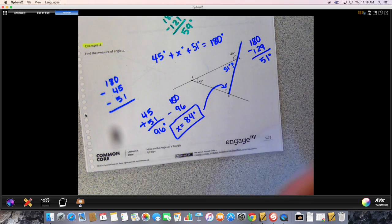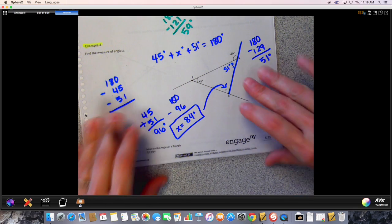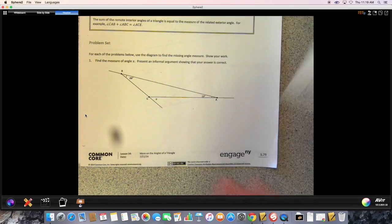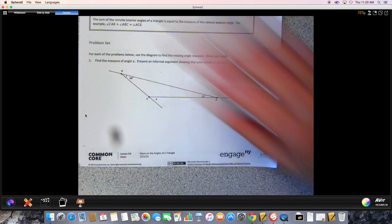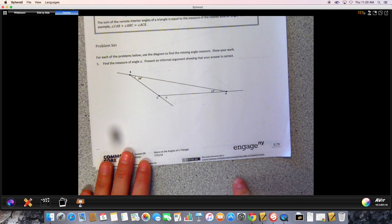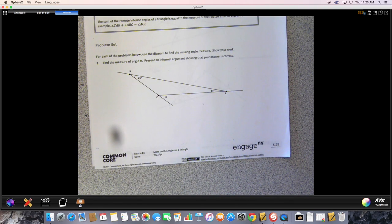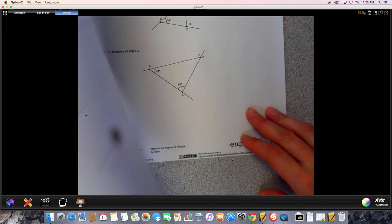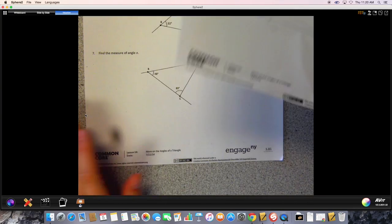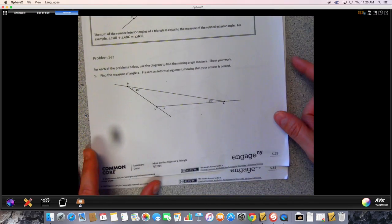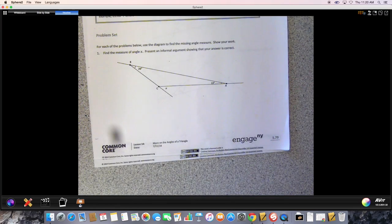Our homework assignment for today is in the packet. It is on page, it starts on page 79. So it says problem set here and we're going to go ahead and do numbers 1 through 10. So 79, 80 is the next page, and 81, and 81 and 82. So 79 through 82 are the page numbers. The problems are numbers 1 through 10.